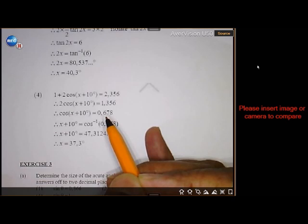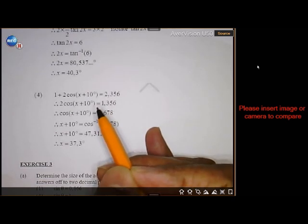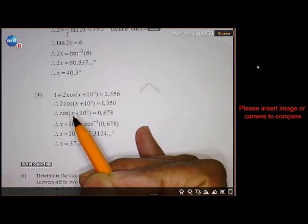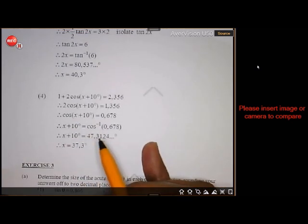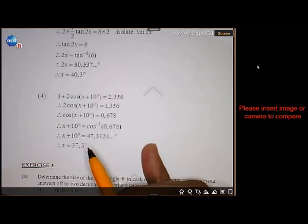And then on the calculator, shift cos of this value. And then, of course, here it will be x plus 10. Once you get your answer on the calculator, then you're going to subtract 10.